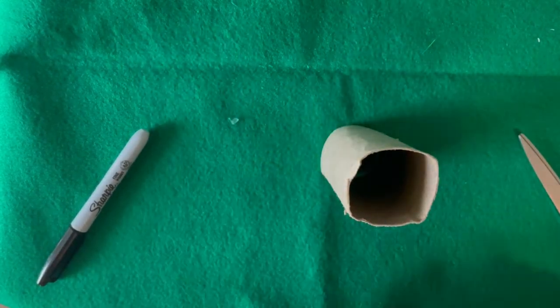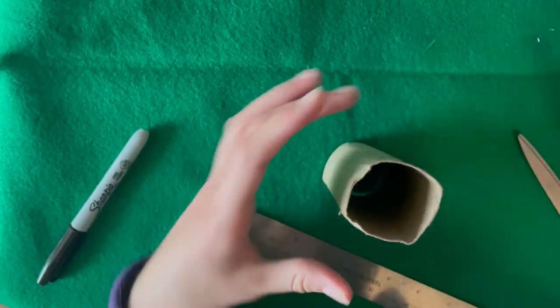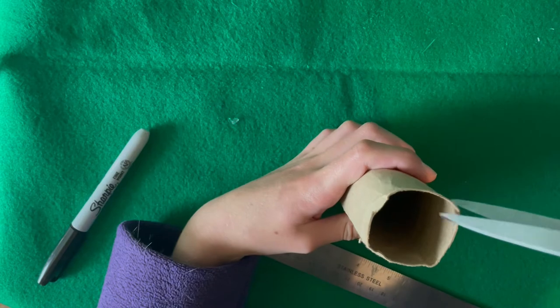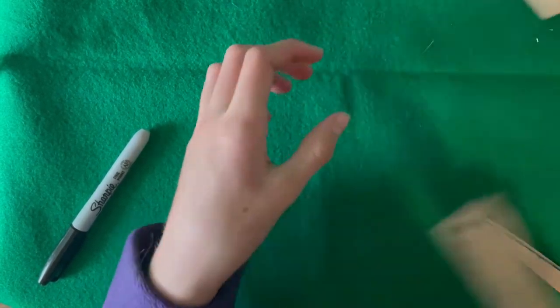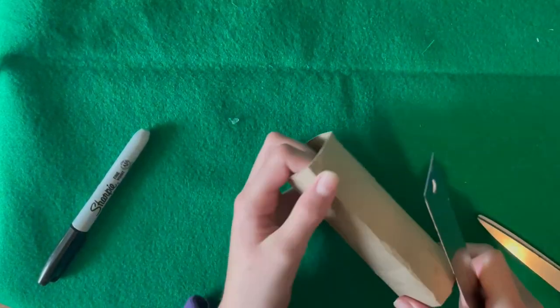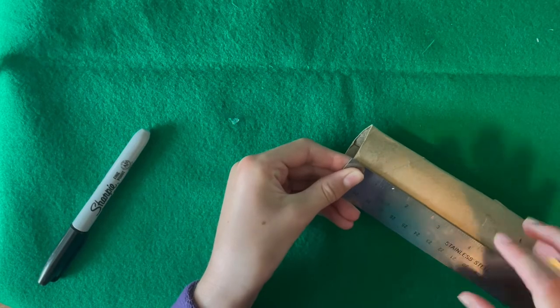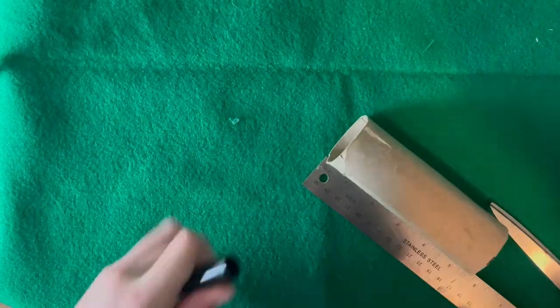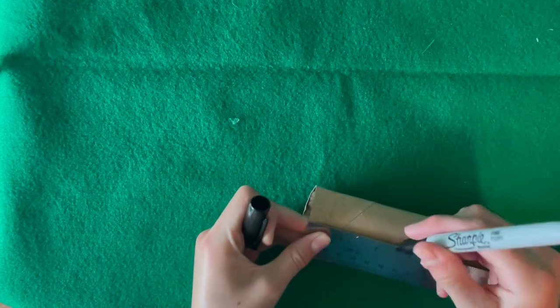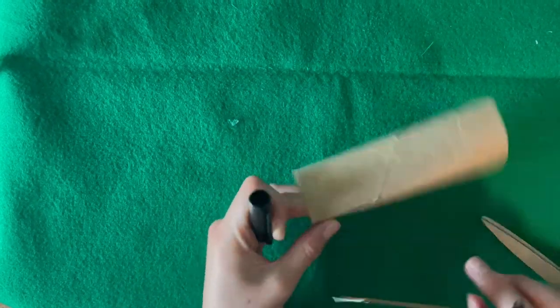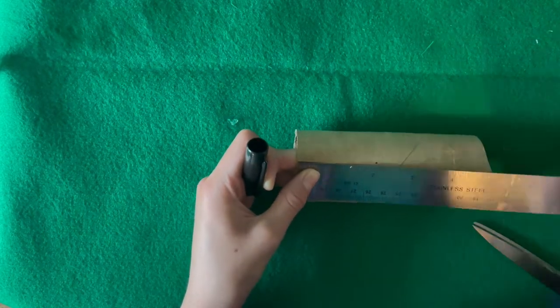Then we are going to measure about halfway and make two slits. And on each side we are going to measure down two inches and put a dot. On the other slit too, we're going to measure down two inches and put a dot.